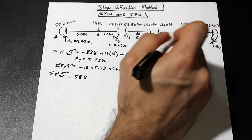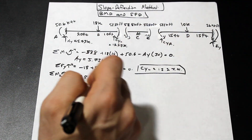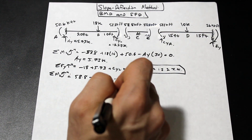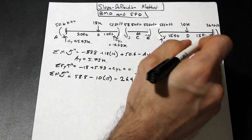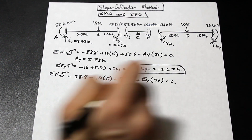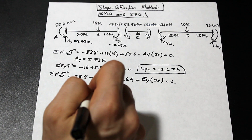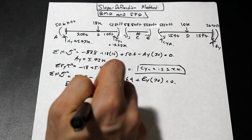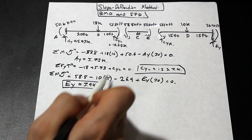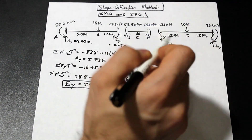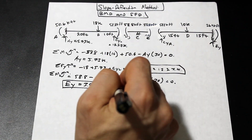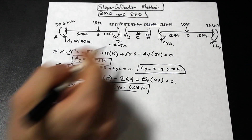We have a positive 58.8 moment, the 10-kip force multiplied by 15 feet in the negative direction, a negative 26.9 kip-foot moment, and a positive EY times 30 feet — all equal to zero. Solving for EY gives 3.94 kip. From the sum of forces in Y: 3.94 minus 10 plus CY-right equals zero, so CY-right equals 6.06 kip.